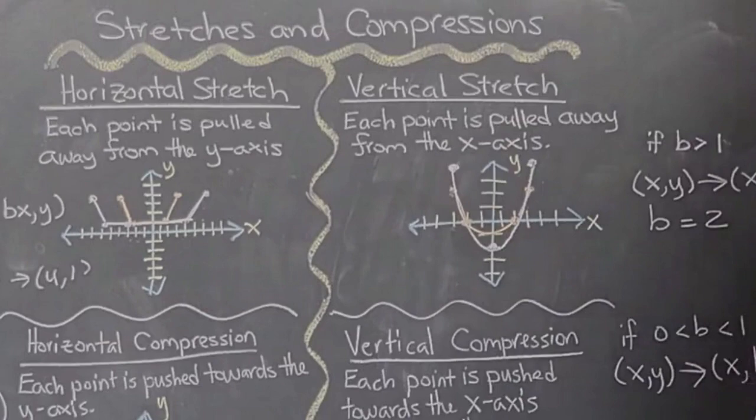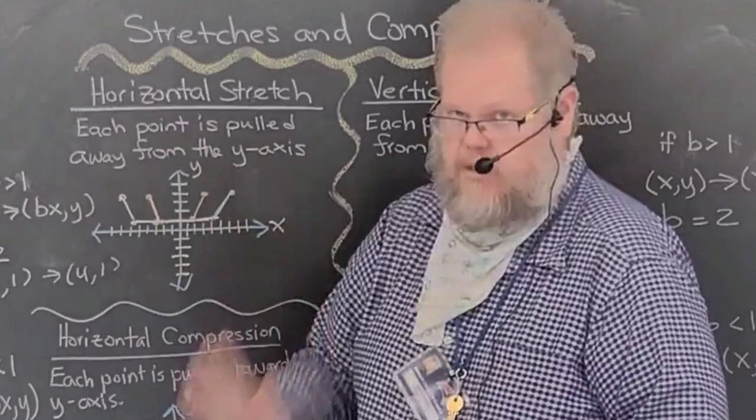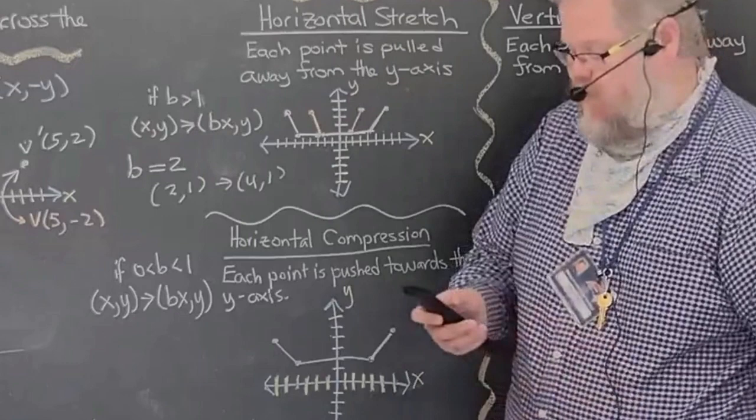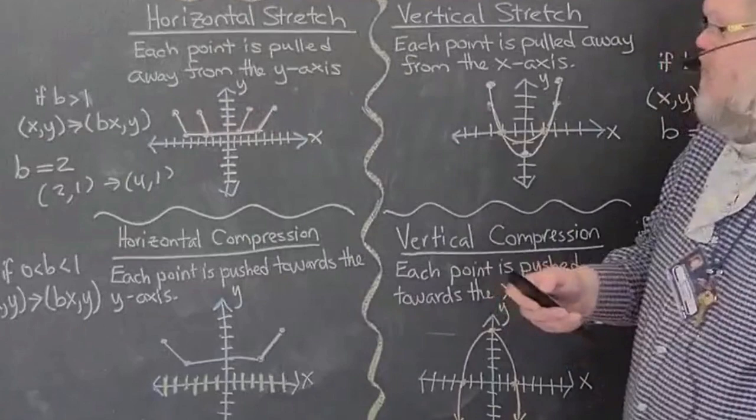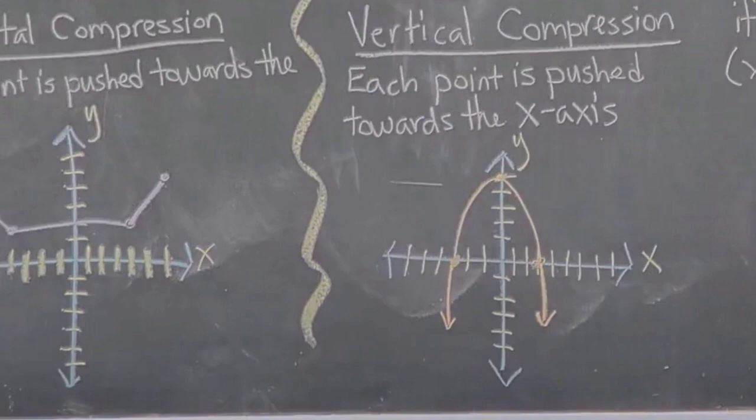For both horizontal and vertical stretching, the number B must be larger than one. Now let's look at horizontal compression, where each point is pushed towards the y-axis. Here, B must be between zero and one — a number like one half or one third.